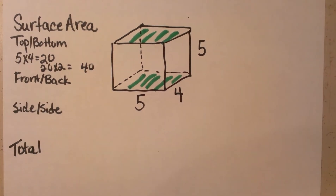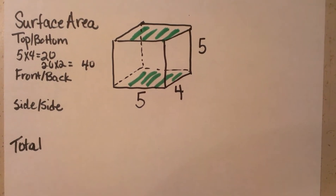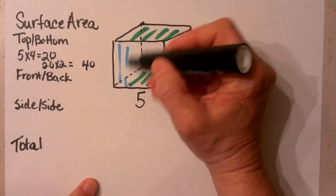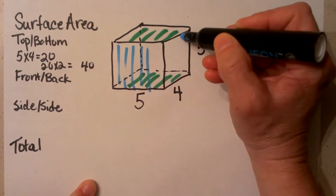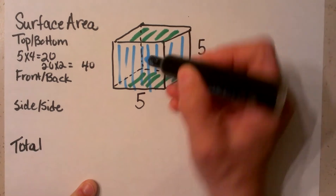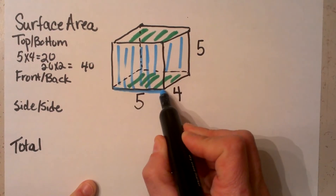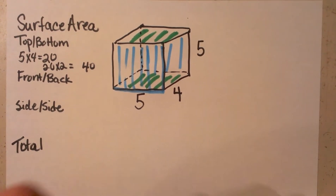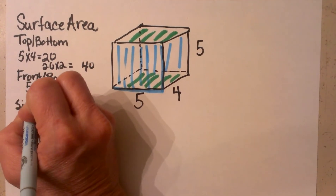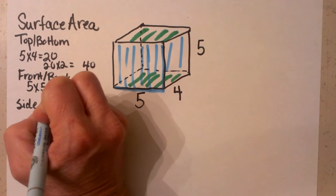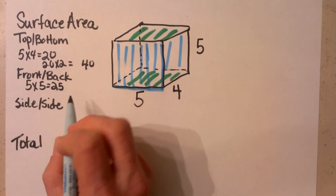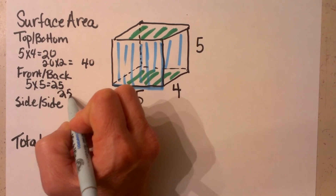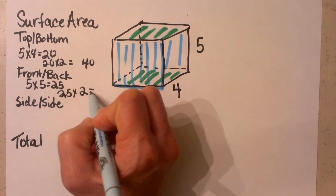Now let's look at the front and the back. The parts we are talking about here are the front of the prism and then the back of the prism. This one measures 5, and then the height of it is 5. So that is 5 times 5 which is 25, and then since I have the front and the back, I have to double that to 50.